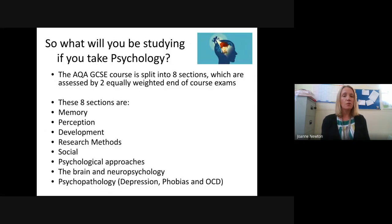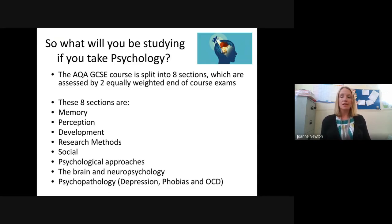If you were to take a GCSE in psychology, you would be covering eight different sections of the course — two equally weighted exams at the end of Year 11 that cover eight different topics, eight different branches of psychology. I'll give you a bit more detail about each of these topics in turn.